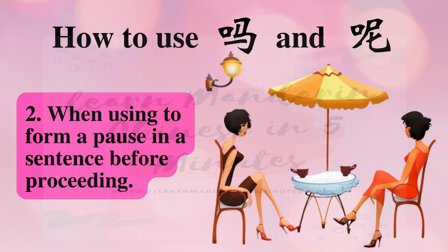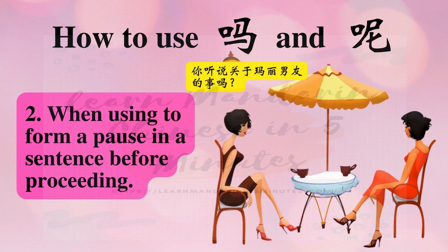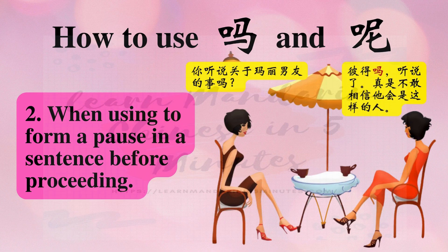Number two: when using 吗 to form a pause in a sentence before proceeding. For example: 你听说关于玛丽男友的事吗? 听说了，真是不敢相信他会是这样的人. Here 吗 is used mid-sentence as a pause before continuing with more information.